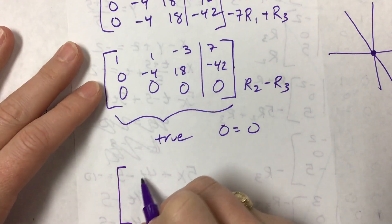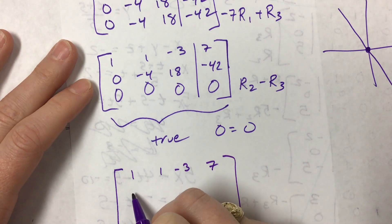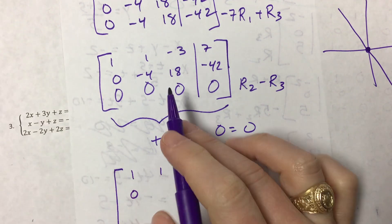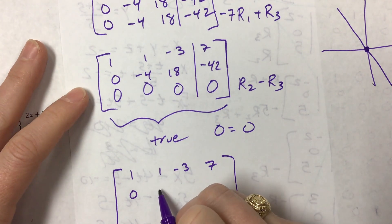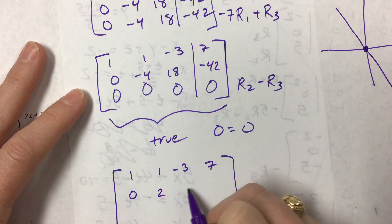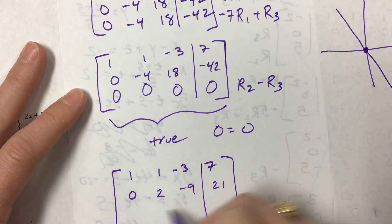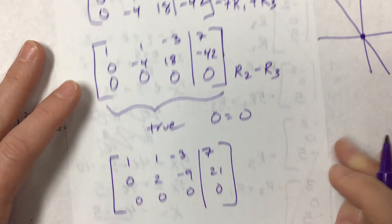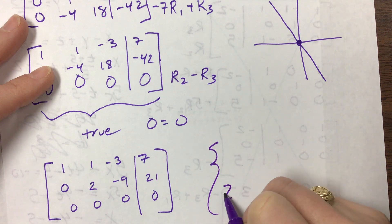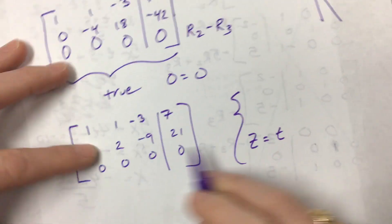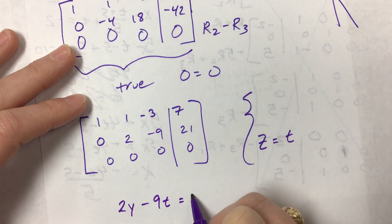Zero, divide by two, because notice I can divide by two and everything. Maybe it can - negative two. Okay, so that gives me smaller numbers to work with. So then if I'm going to find the parametric, I'm going to say that z equals t, and now I have that 2y minus 9t equals 21.